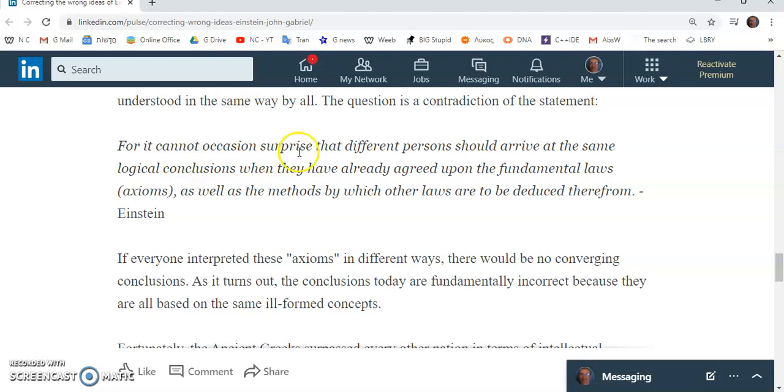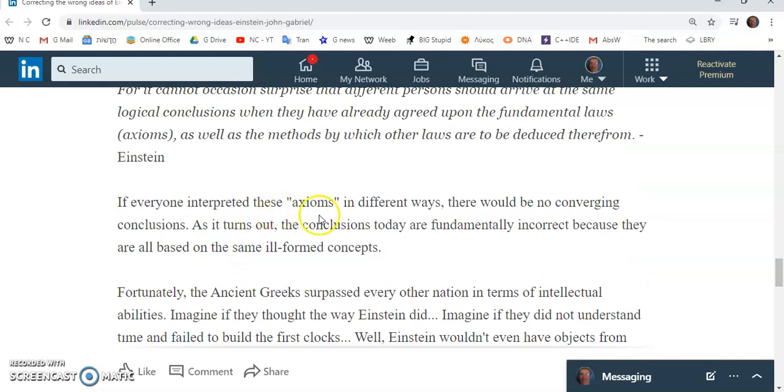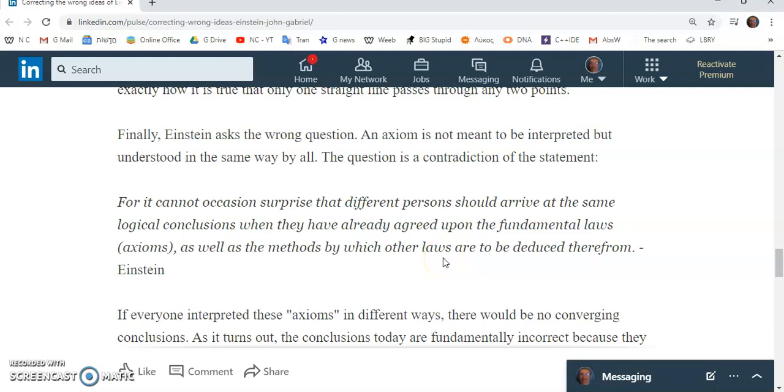For example, he says, for it counts as a prize that different persons should arrive at the same logical conclusions when they have already agreed upon the fundamental laws, as well as the methods by which other laws are to be deduced therefrom. If everyone interpreted these so-called axioms in different ways, there would be no converging conclusions. As it turns out, the conclusions today are fundamentally incorrect because they are all based on the same ill-formed concepts. Really, I'm not convinced that Einstein was a crank, and I'm convinced that he was above average intelligence, but certainly not a genius. And I think that there were powerful interest groups during his time, and even today.